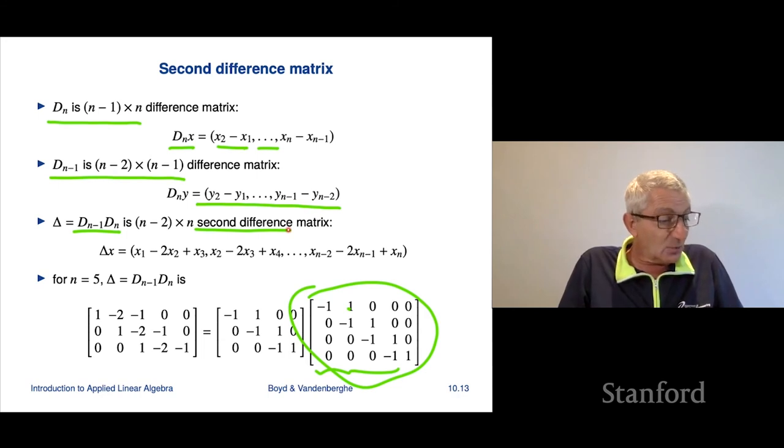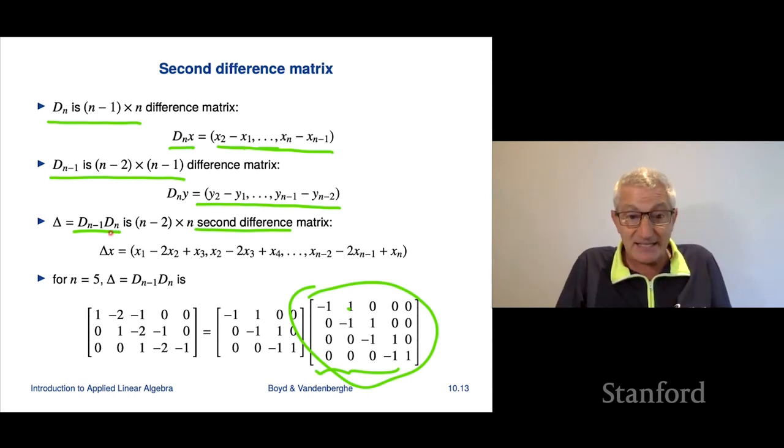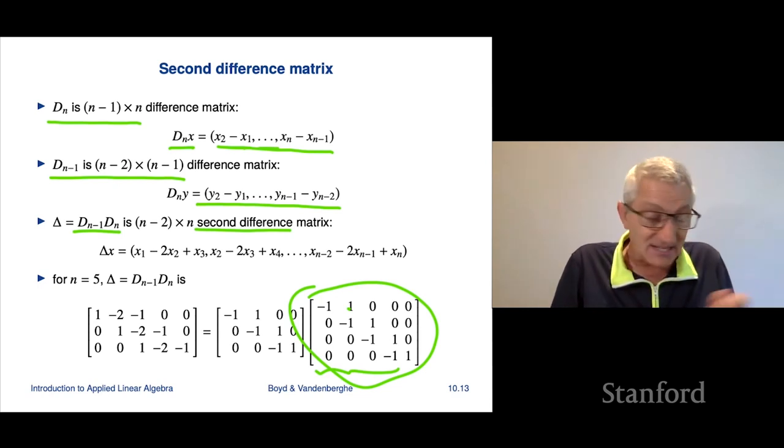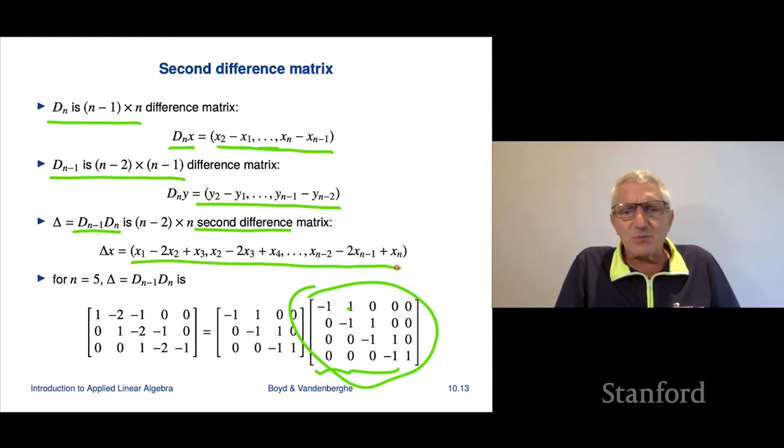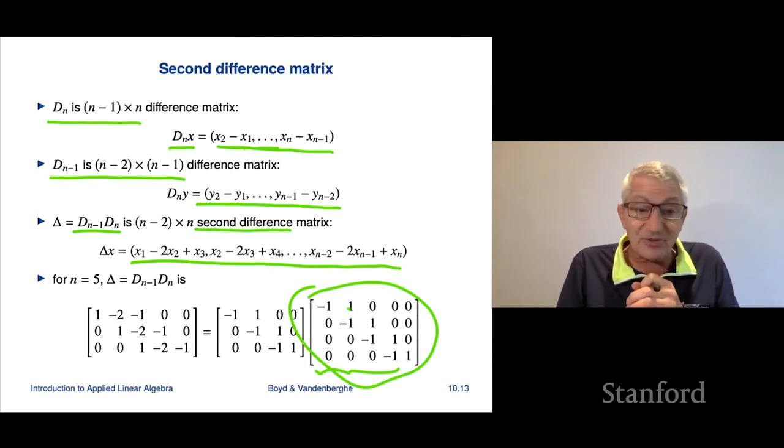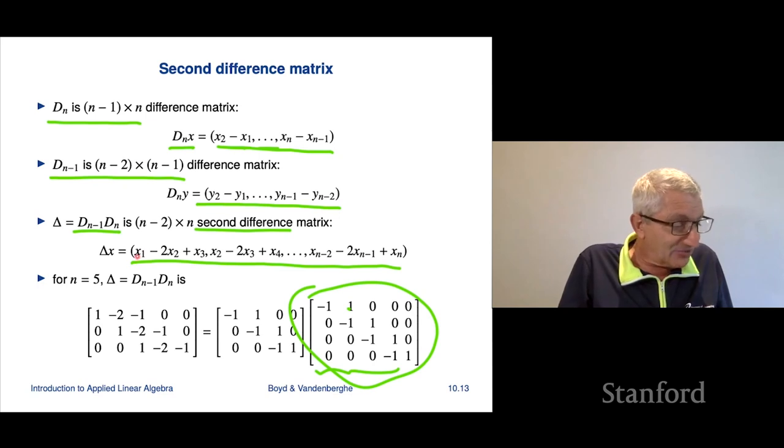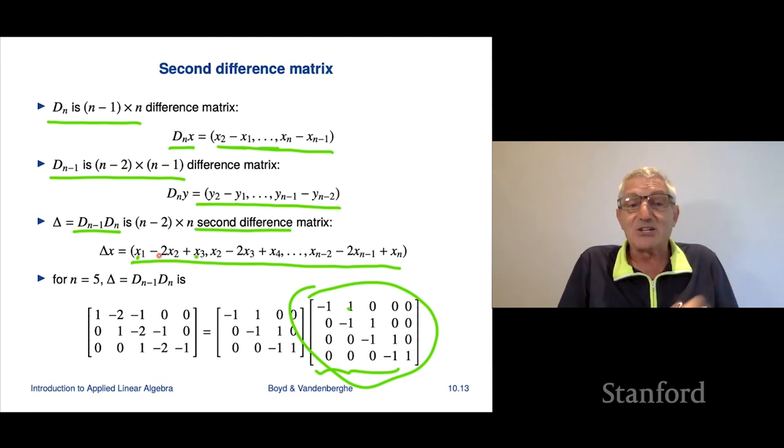And what it does is it simply forms the differences of the vector. That's the Dn x. It takes the differences and then it forms the differences of the differences. And when you do that, you end up with something that looks like that. And this maybe looks familiar to you or maybe not. The second difference is actually something like the first plus the third entry minus twice the second entry. So these are the entries of this if you take the so-called second difference.